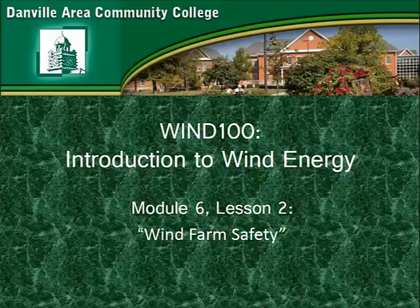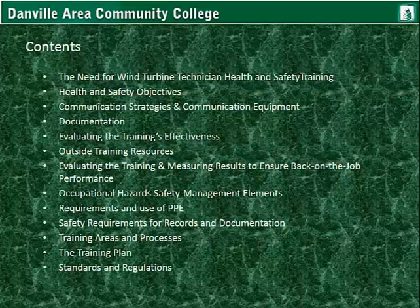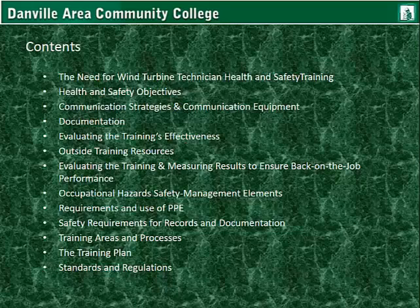This is Lesson 2 for Module 6, Wind Farm Safety. We'll talk about the need for wind turbine technician health and safety training, basic health and safety objectives, communication strategies and communication equipment, the need and use of documentation, evaluating training effectiveness when dealing with on-site or off-site training programs, outside training resources, evaluating training and measuring results, occupational hazards, safety management elements, requirements and use of personal protective equipment, safety requirements for records and documentation, training areas and processes, a general idea of what's expected with any training plan by the training institution, and also standards and regulations.